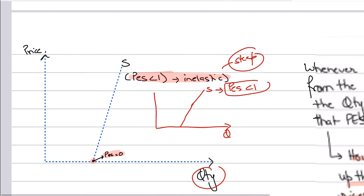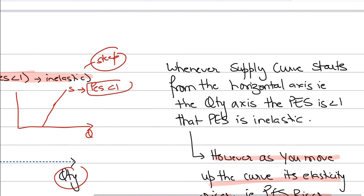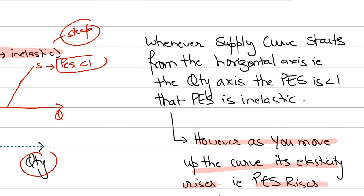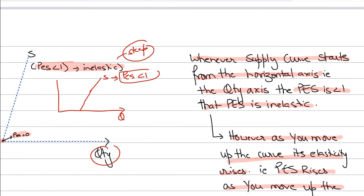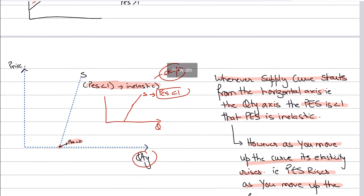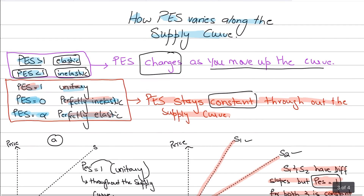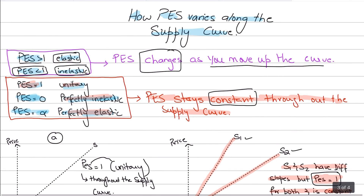So these are the rules you need to know regarding elasticity along the supply curve. Whenever the supply curve starts from the horizontal axis, PES is less than 1 — inelastic — but as you move up the curve it rises. That's about it for this video. I hope you enjoyed it and understood these concepts. I'll see you in the next video — until then, take care.